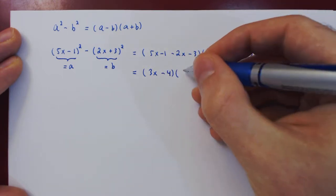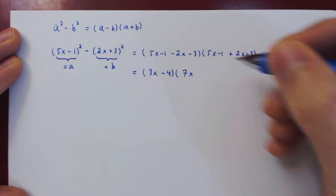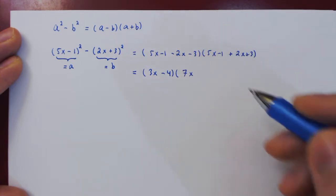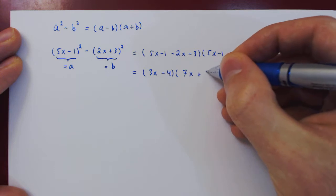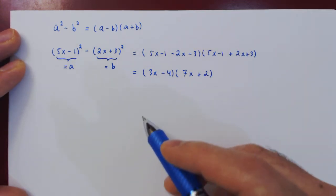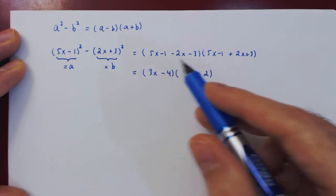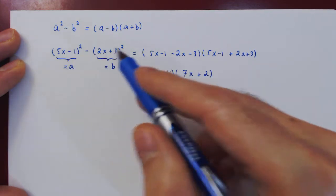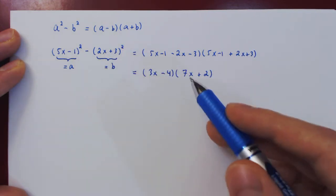5x plus 2x, 7x. Negative 1, positive 3, positive 2. And now the factoring is complete. Much more efficient to use the difference of squares than to expand both terms, regroup, and try to factor again.